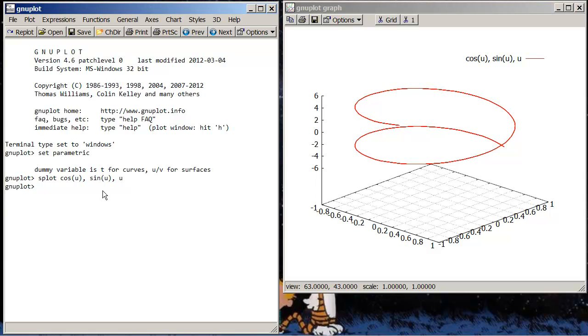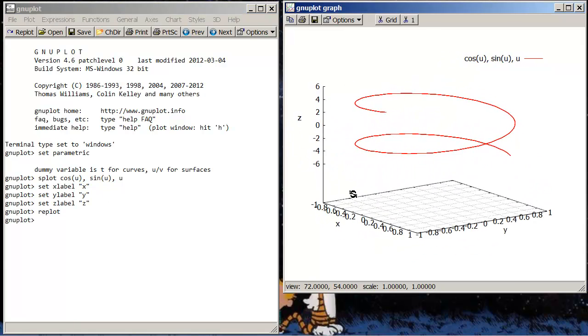Let's see. Let's label our axes first. So set X label X, Y label Y, Z label Z, and replot. And now we have X, Y, and Z axes nicely labeled.